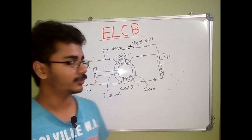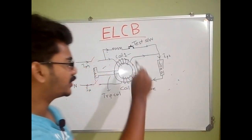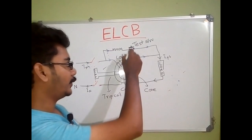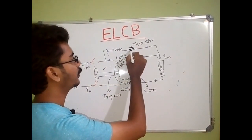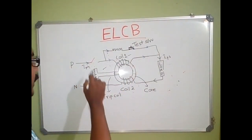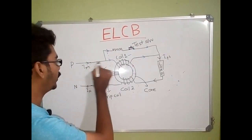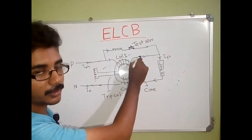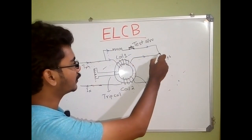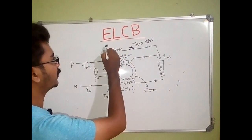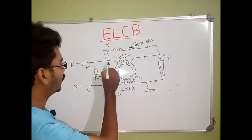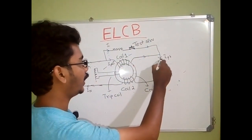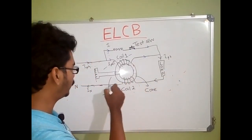Now we are going to look at the function of the test switch. The test switch is used for testing whether the ELCB is in working condition or not. When we press the test switch, this branch will be short-circuited. Under normal conditions, the phase current entering is split into two branches — one passes through Coil 1 and the other passes through a resistance and this terminal. Let us say the current through the test switch is I, so the current through Coil 1 is I-phase minus I.